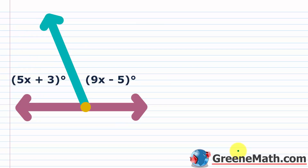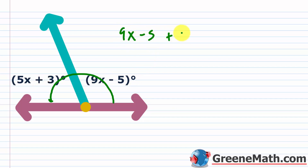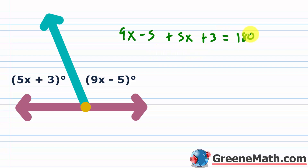Now let's talk about supplementary angles. A straight angle is half of a rotation and measures 180 degrees — half of 360 degrees. When the sum of the measures of two positive angles is 180 degrees, those angles are called supplementary angles. In this example, one angle is 9x − 5 degrees and the other is 5x + 3 degrees. Setting them equal to 180: (9x − 5) + (5x + 3) = 180.